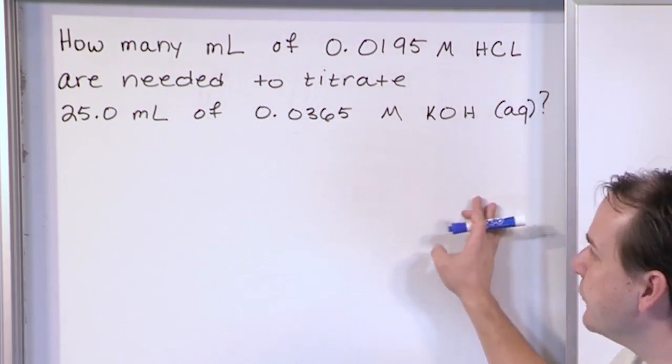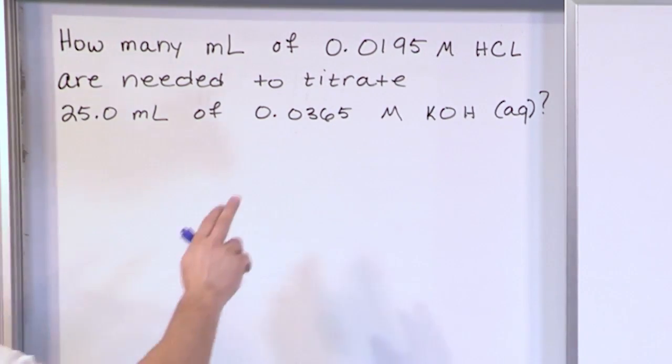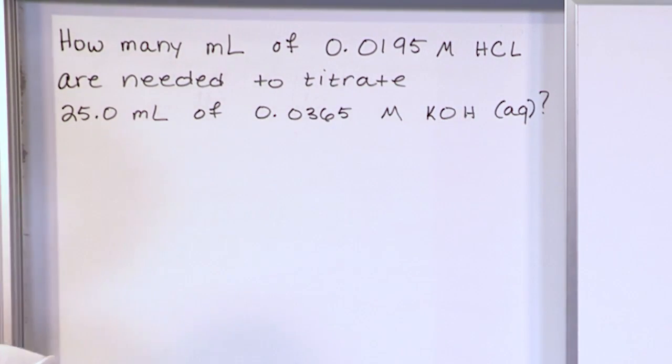So we need to write a chemical reaction to be able to get anywhere in this problem. We know we have hydrochloric acid and we're trying to titrate or to neutralize potassium hydroxide. So what we're going to do is write that down.